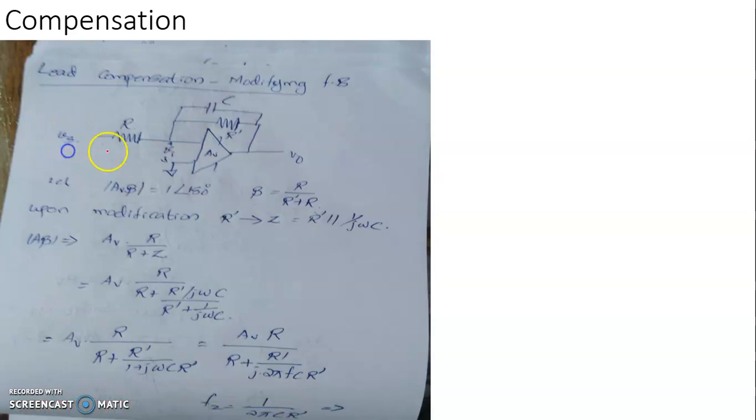This is the source voltage Vs that will cause an input voltage Vi, a differential input voltage Vi, and the output is Vo. In the absence of this capacitor, let us assume that at a desired frequency of amplification, Aβ is satisfying the Barkhausen criteria equal to 1∠180°. That means at this frequency, this amplifier is not stable—it is producing oscillation and eventually the output will be switching into saturation. In this case, the feedback fraction is R divided by R plus R prime.